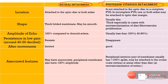The first difference is with relation to the location of these detachments. The retinal detachment is always attached to the optic disc at both sides. However, a posterior vitreous detachment might not have such a central attachment — it will actually be attached to either side of the optic disc margin.